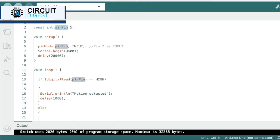First, we'll declare our variable which is the PIR pin variable and it is connected to pin 5. Our PIR sensor is connected to pin 5 from the circuit diagram before.